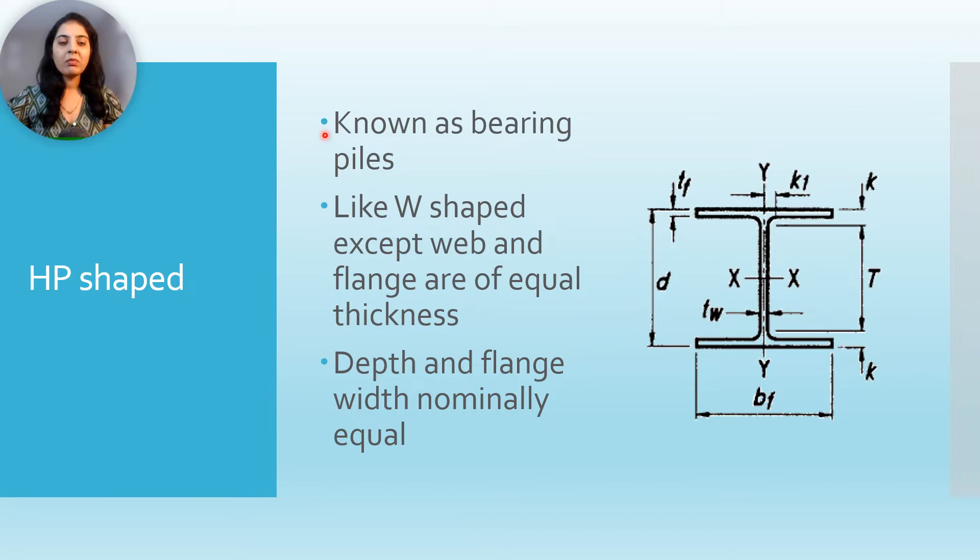HP shape, they are also known as bearing piles. They are like W shape except web and flange are of equal thickness. Depth and flange width are nominally equal, tf equals tw. So this is web, that is tw, and flange tf are equal. tf equals tw and bf equals d.